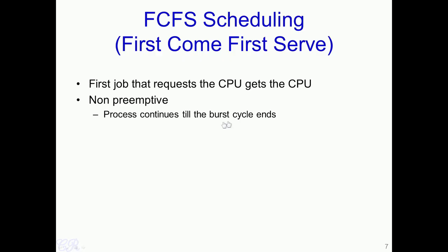The first come first serve, or FCFS, scheduling algorithm works as follows: the first process that requests the CPU — that is, the first process which enters the ready queue — would be allocated the CPU. This is a non-preemptive scheduling algorithm, which means the process once allocated the CPU will continue to execute until its burst cycle completes.